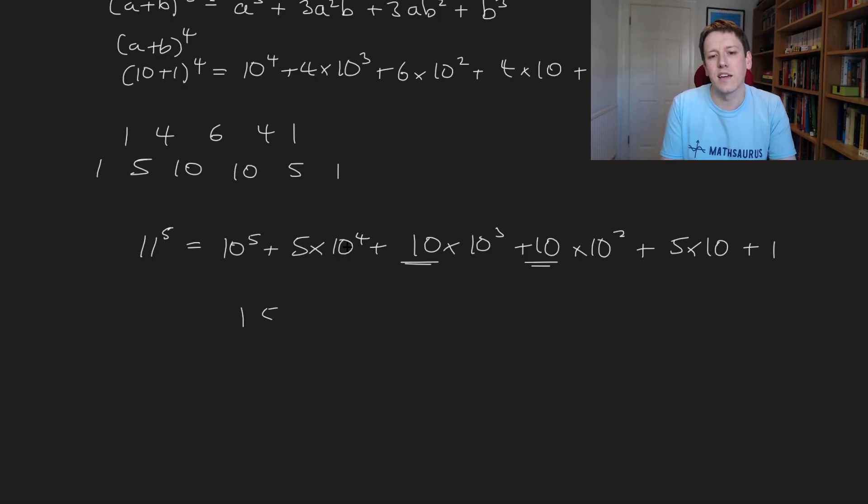But if you sort of think of it like a number, it's got 1, 5, this is a digit 10, this is a digit 10, this is a digit 5 and 1. And just think about carrying. So actually this 10 here, rather than being in a 10 to the 3 column, I need to move its first digit, the 1, into the 10 to the 4 column.